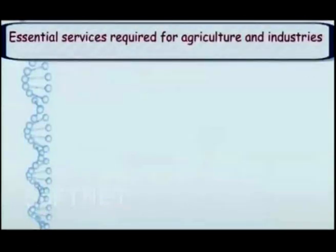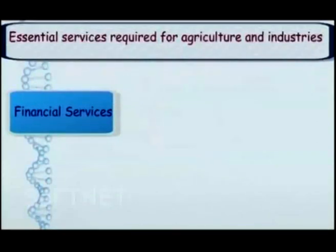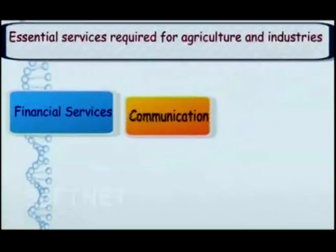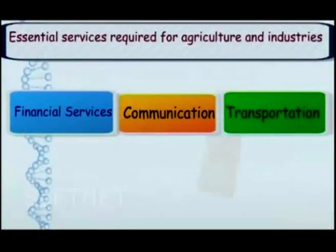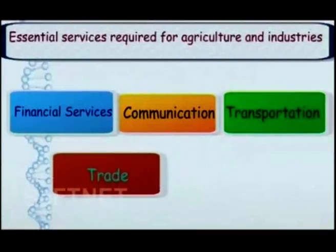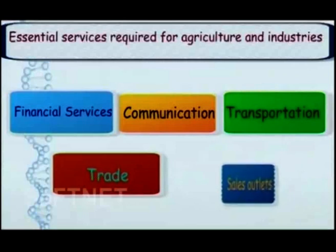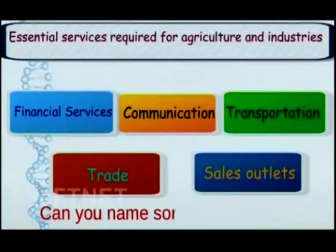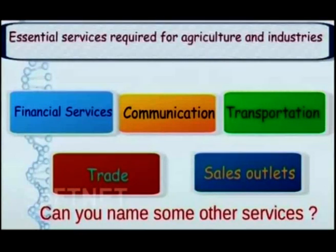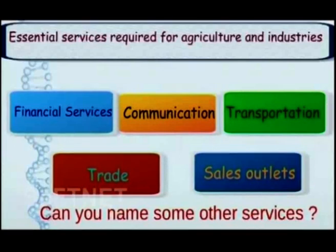Now children, let us view some pictures of essential services required for agriculture and industries: financial services, communication services, transportation services, trade, and sales outlets. Can you name some other services? Try to list out some other services required for agriculture and industries when you go back to your classroom.